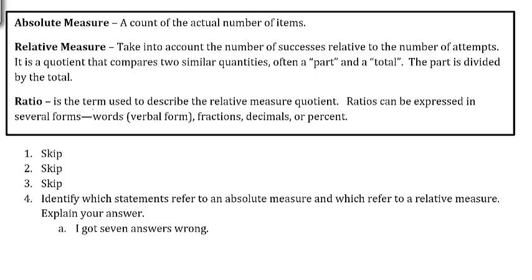And also in this box we have the definition for a ratio which we'll talk about in another video. And this is the term that's used to describe the relative measure quotient. So the two things that you're comparing when you do that division, that quotient is the ratio. And a ratio can be expressed in several forms. It can be expressed in words or a verbal form, fractions, decimals, or as a percent.